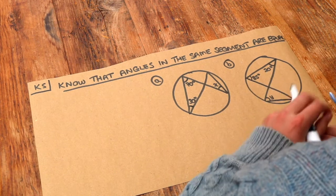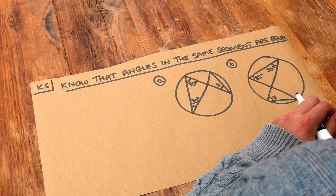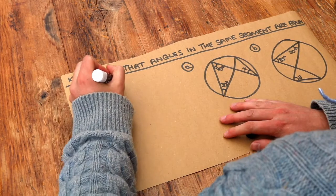This is an example of a circle theorem. A circle theorem is just an angle law to do with circles. So the theorem is this.